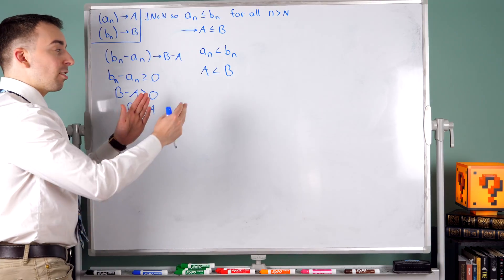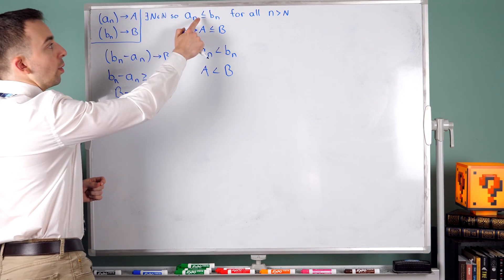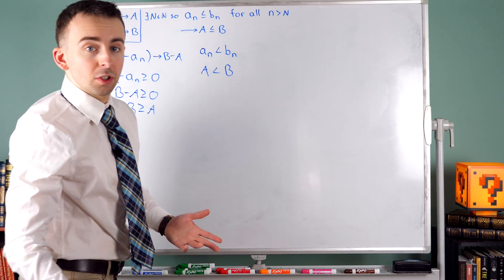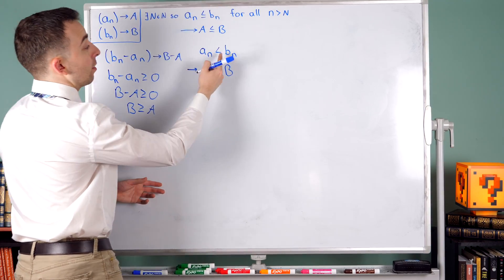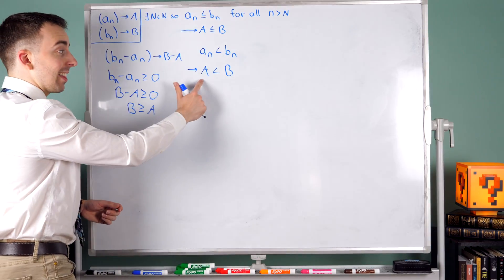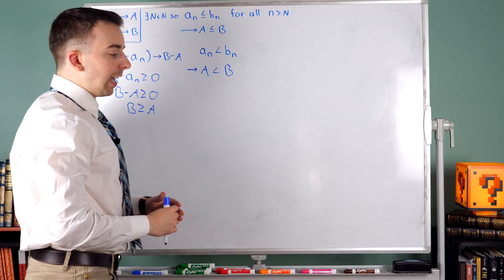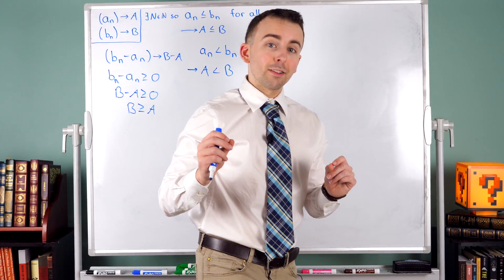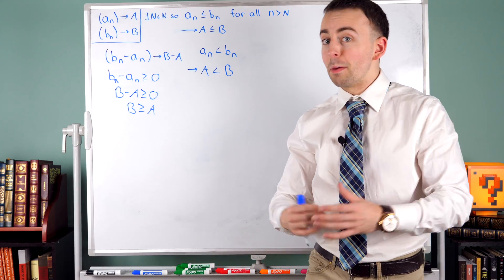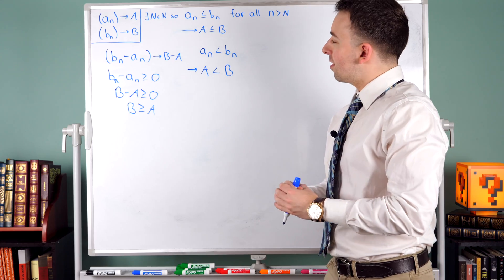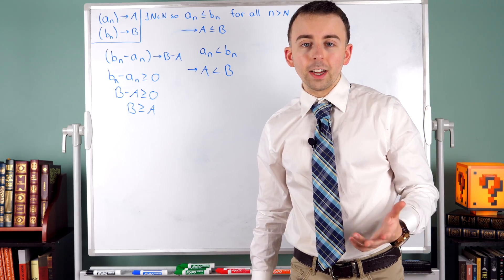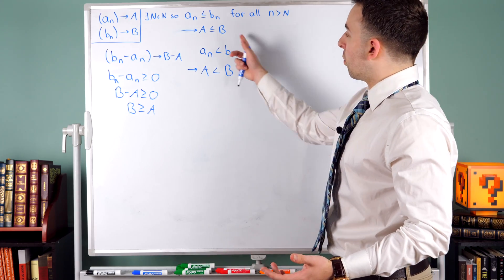But again, now let's go back to this question. What if we drop the or equal to? Is this a true implication? Does An being strictly less than Bn imply that the limit A is less than B? And as you might have guessed, the answer is no. Or maybe you didn't guess that, but that's the answer. The answer is no, which should seem pretty intuitive depending on how you think of it.